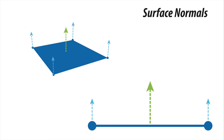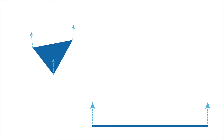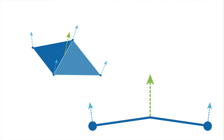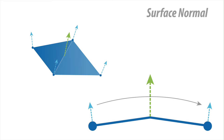Triangles, the simplest polygons, are always planar or flat. Quads, which are composed of two triangles, are more commonly used in 3D modeling, but may not always be planar. To create the illusion of smooth curved surfaces, 3D software uses a technique called normal averaging. Vertex normals of connected polygons are averaged, and shading is then blended across the surface based on these averaged normals. This creates the appearance of curvature, even on flat geometry.